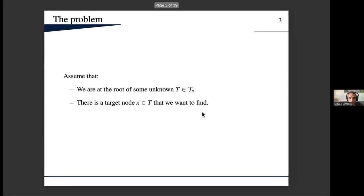So what is our problem? We are at the root of some unknown tree with n edges, and we also have a target node x in that tree that we want to find, but we don't know where this is. In addition, we can't do much. Being at a vertex, the only thing we can do is to explore one of the children if it's not yet explored.